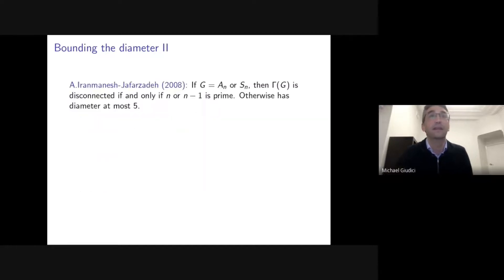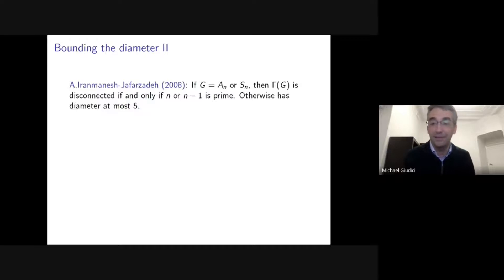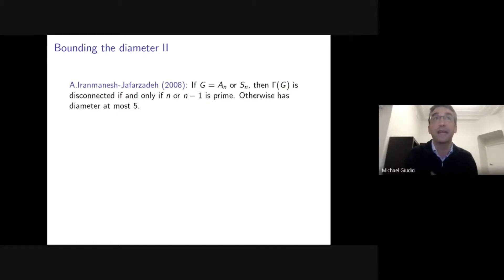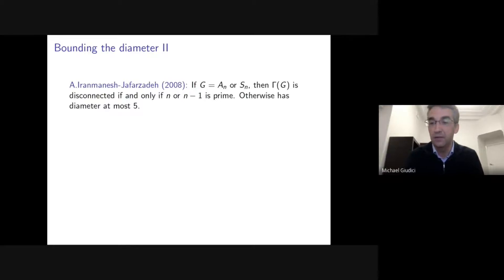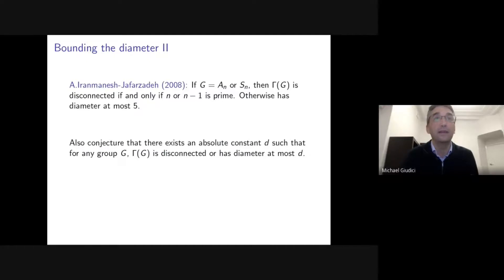For the alternating and symmetric groups, Iranmanesh and Jafarzadeh in 2008 showed that the commuting graph of Aₙ or Sₙ is disconnected if and only if n or n−1 is prime, and otherwise — when connected — the diameter is at most 5. They conjectured that there should be some absolute constant d such that for any group, if the commuting graph is connected, then it has diameter at most d.